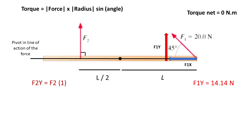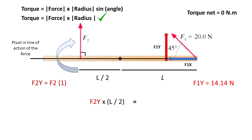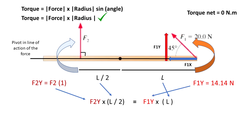We know that torque can be defined as the magnitude of the force multiplied by the magnitude of the radius — the distance between the pivot and where the force is applied — and the sine of the angle between those. In this case, we already know that forces F2 and F1y are perpendicular to the rod. F2 generates a clockwise torque equal to F2y multiplied by L over 2, where L over 2 is the distance between the pivot and force F2. For the net torque to be zero, F1y times L must equal F2y times L over 2.